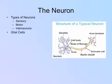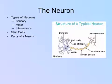Another cell worth mentioning that is not specifically a nerve cell is the glial cell — a helper cell. Glial cells help neurons communicate. Looking at the diagram on the right, you'll see a component called the myelin sheath. Glial cells make that outer covering of the axon for the neuron. They're not neurons themselves, but they are important for communication in the nervous system.